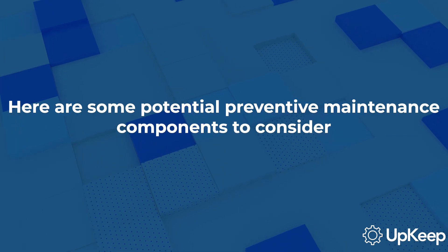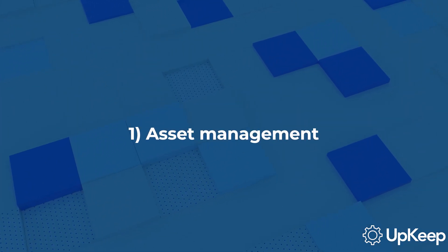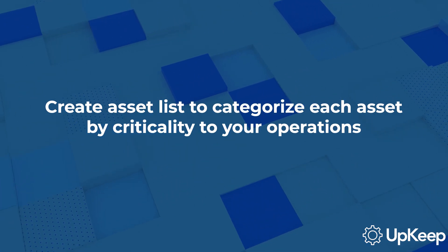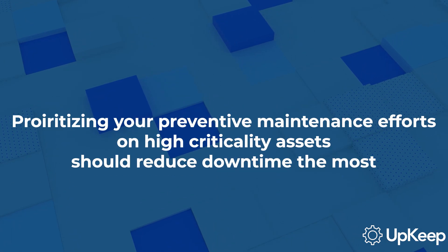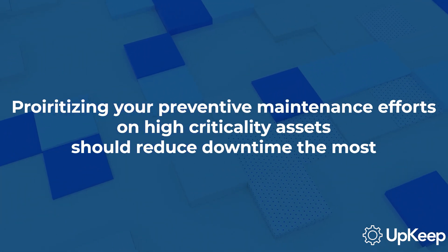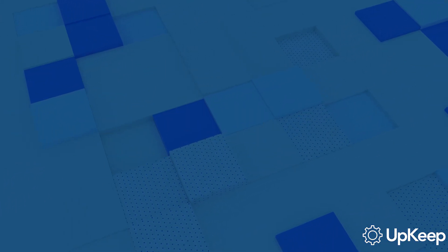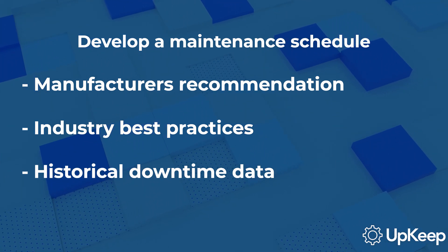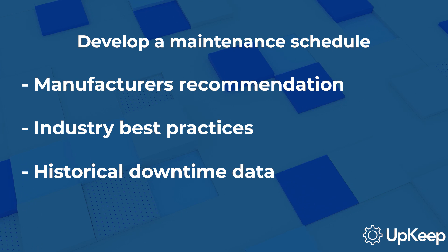Here are some potential preventive maintenance components to consider. First, asset management: create a comprehensive asset list and categorize each asset by its criticality to your operations. Prioritizing your preventive maintenance efforts on high-criticality assets first should reduce downtime the most. Next, maintenance scheduling: develop a maintenance schedule based on manufacturer recommendations, industry best practices, and your historical downtime data.